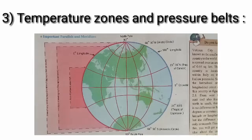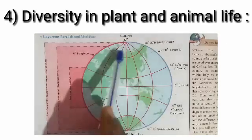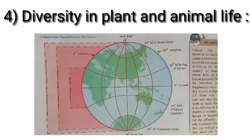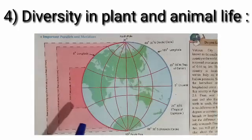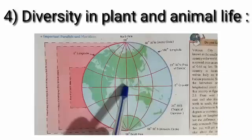The next very important point is diversity in plant and animal life. As we all know, as there is difference in temperature in these all areas, then definitely there will be diversity in animal life and plant life. Variation in the intensity of sunlight, that is temperature zones, leads to regional diversity in plant and animal life. In this region, different animals and plants are found. Here, different animals, plants, trees are found and here they are different.